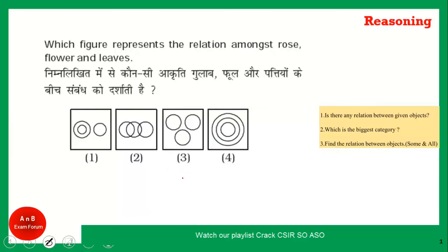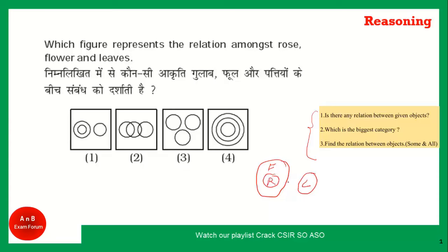Which of the following diagrams represents the best relationship between rose, flower and leaves? Is there any relationship? Yes, all these are parts of the plant. Flower is the biggest category, so I draw this circle for flower. Leaves cannot be flower, leaves cannot be rose. This circle represents leaves. All roses are flowers, so all roses are within the flower circle. Option 1 is the correct answer. These questions are very easy and very scoring if you have a little understanding of the relationship.